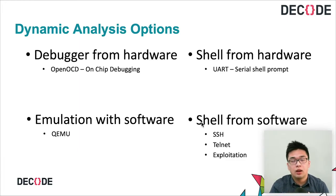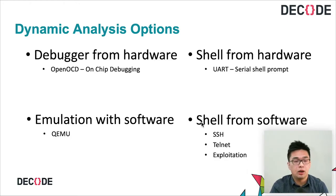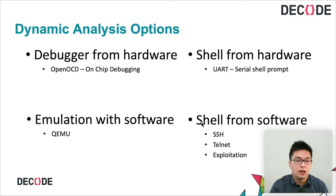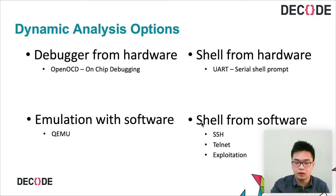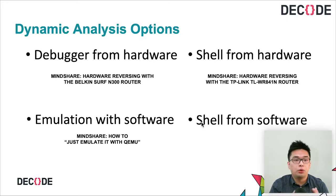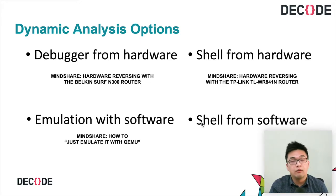There are also two other QEMU-based emulation frameworks called Firmadyne and Armitage. On the hardware side, things get a little bit more interesting — you don't necessarily need a shell to gain debugger access. We're going to focus more on the hardware side today. To get a shell from the hardware, we can use something called UART, also known as the serial shell. To gain debugger access on the hardware side, we use JTAG along with OpenOCD.